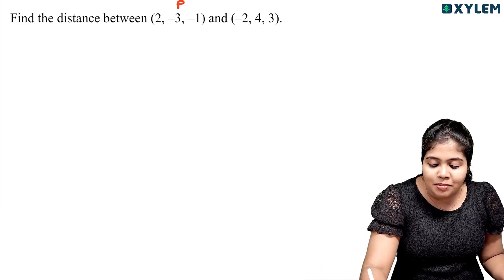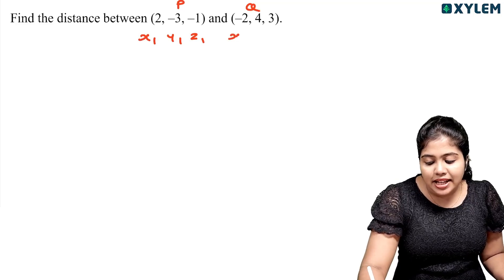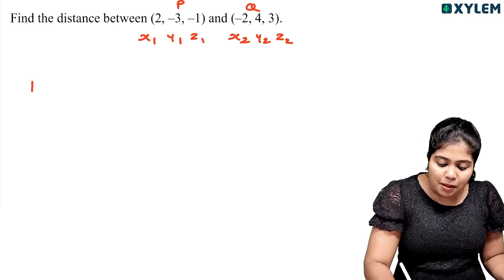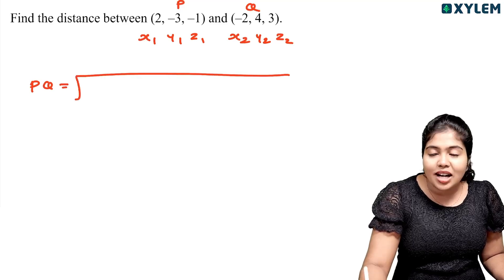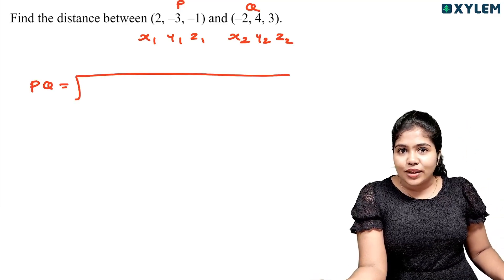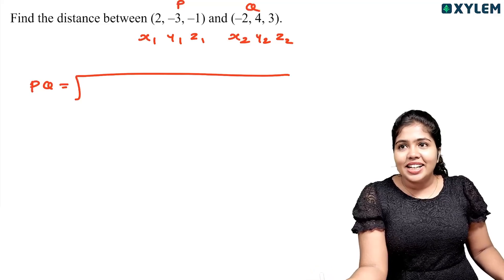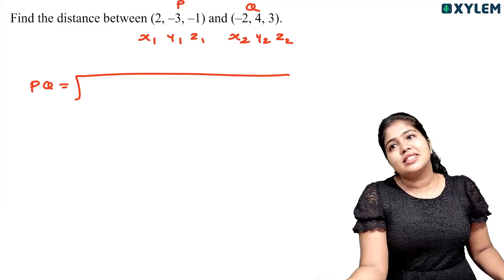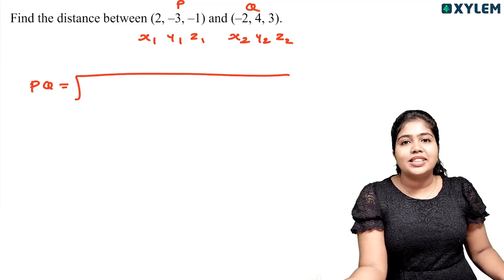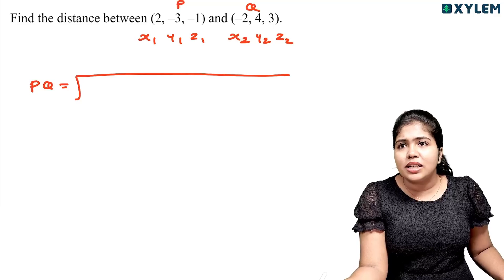This is point P and this is point Q. P has coordinates x1, y1, z1 and Q has coordinates x2, y2, z2. The distance PQ is equal to the square root of (x2−x1)² + (y2−y1)² + (z2−z1)². We find the difference in each coordinate, square it, add them, and take the square root.